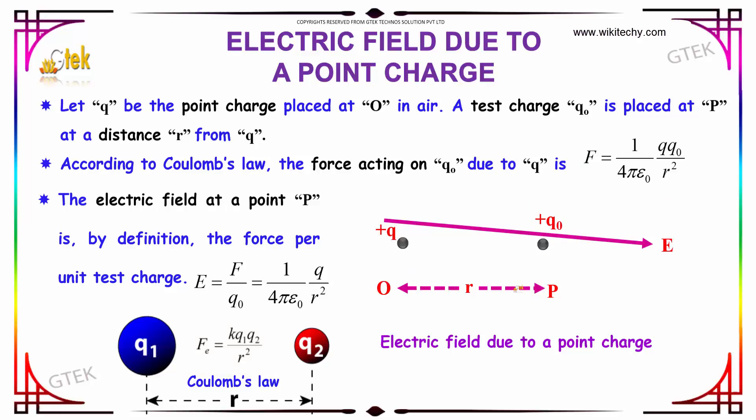The electric field at a point P, by definition, is the force per unit charge, which is F divided by Q0. So the value of F will be substituted, that is 1 divided by 4 pi epsilon 0, Q divided by R square.